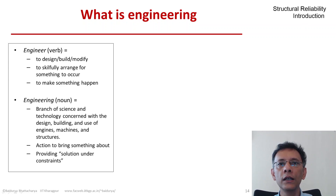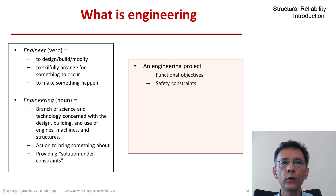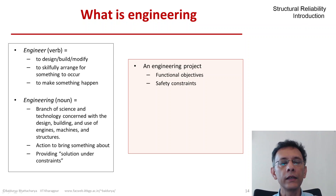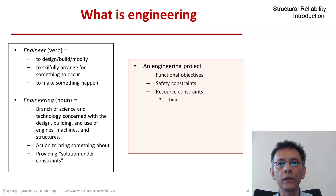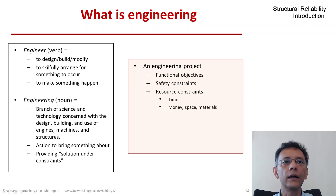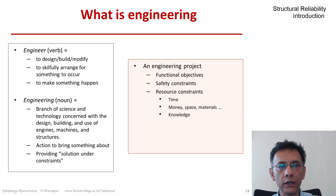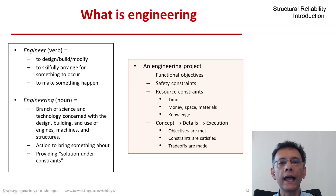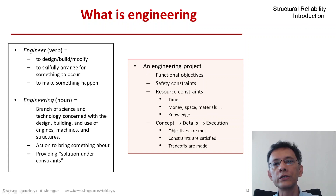So where does this notion of solution under constraints come from? An engineering project always starts with functional objectives that the product or system must satisfy. There are constraints of safety, constraints of resources — the available time, space, materials, funding, and so on. Very importantly, there is also the constraint of knowledge about the state of the art: how the system behaves, its mechanics, its environment, its future service conditions. So an iterative process starts until a solution is reached that meets the objectives and satisfies the constraints, and invariably in this process trade-offs are made.